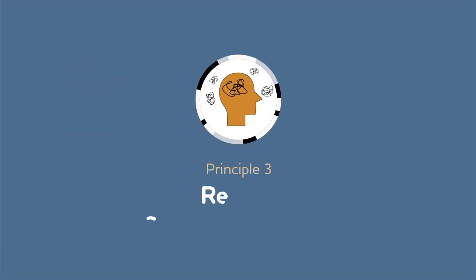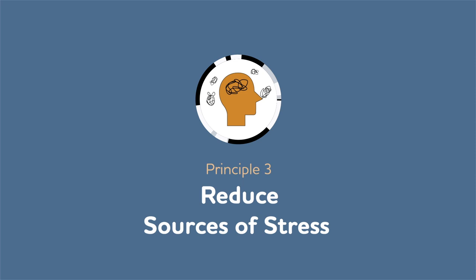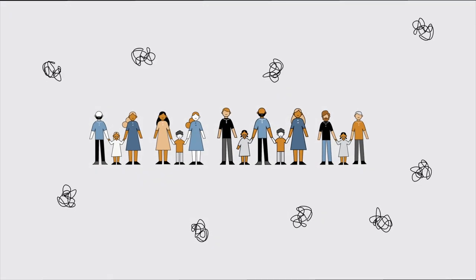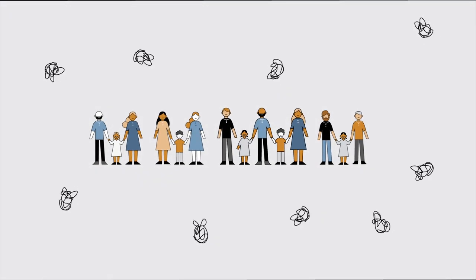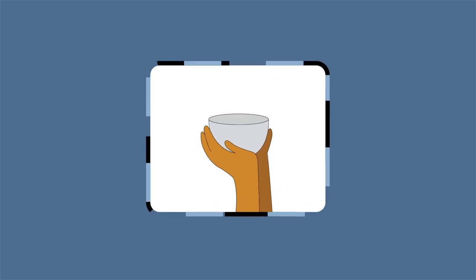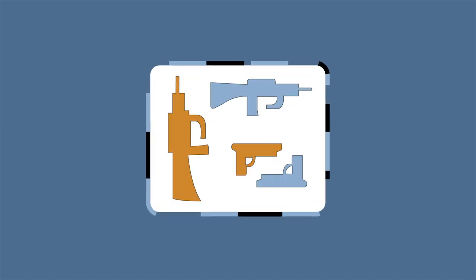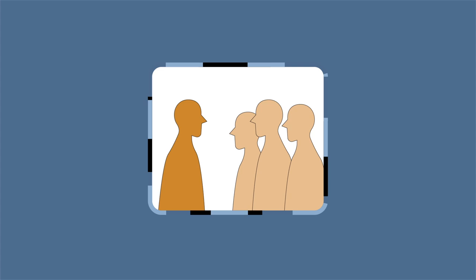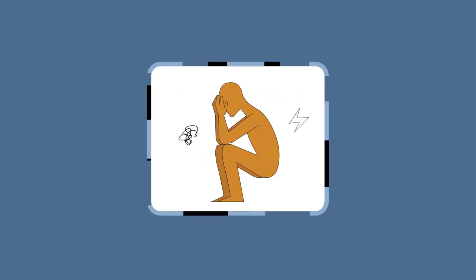Principle 3. Reduce sources of stress. Millions of children and families experience severe stress every day caused by things like poverty, community violence, racism, substance abuse, mental illness, and more.